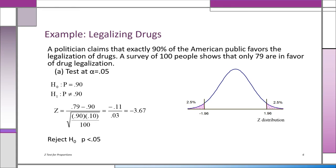I want to point out one more thing. Remember, when you're doing hypothesis tests, you need four things: the hypotheses — because you can't reject something that isn't there — the critical values from the distribution of the test statistic, the calculated value of the test statistic, and your conclusion: reject or not reject.